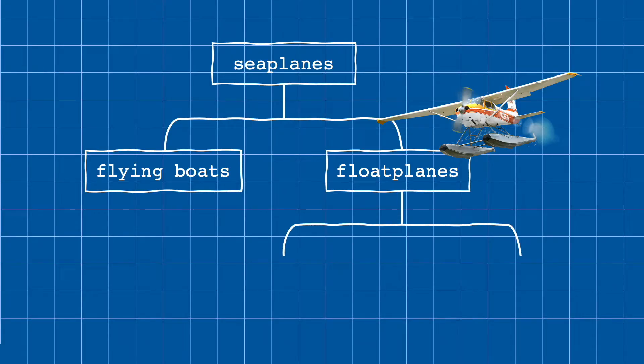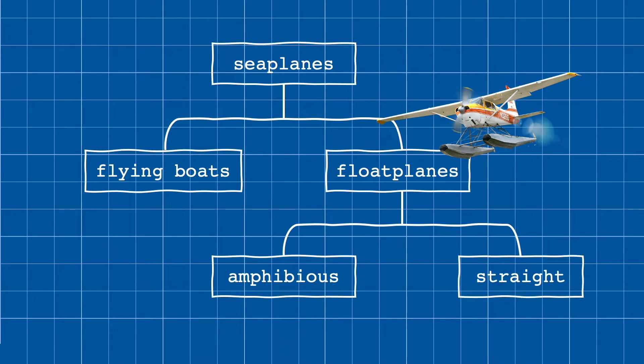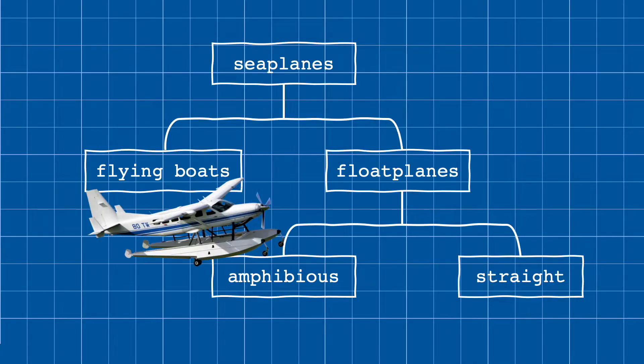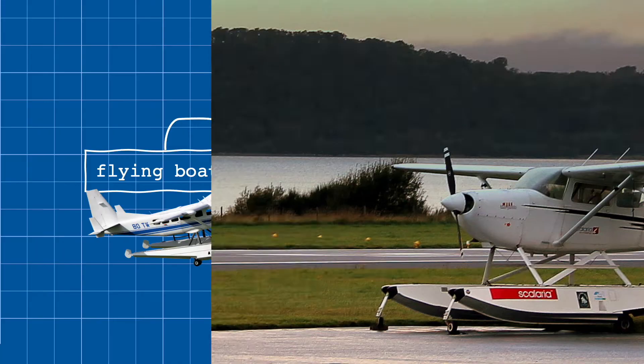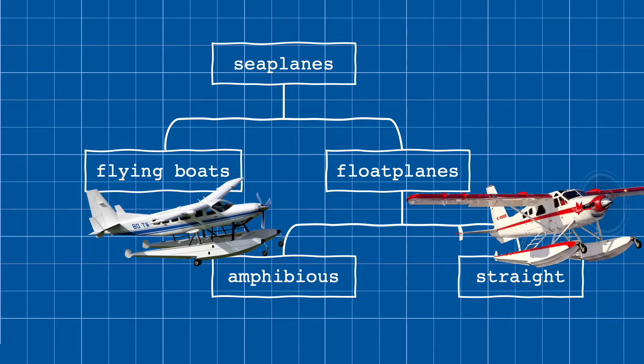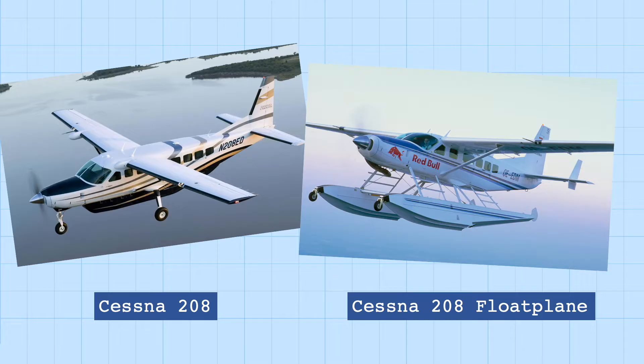Float planes can be further separated into amphibious float planes or straight floats. Amphibious float planes can land on both water and land, usually through retractable landing gears that extend downwards from the floats. On the other hand, straight float planes will only work on water, and oftentimes they're built by simply retrofitting floats onto the bottom of normal land-based airplanes with some minor modifications.